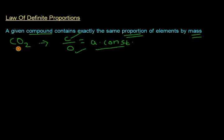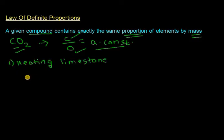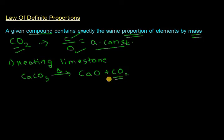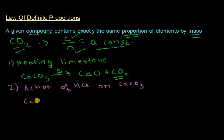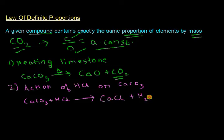Let's look at four preparations of carbon dioxide. The first is by heating limestone, which is calcium carbonate (CaCO3). When you heat CaCO3, you get calcium oxide and carbon dioxide. The second method is by the action of hydrochloric acid on calcium carbonate: CaCO3 + 2HCl → CaCl2 + H2O + CO2. This is the balanced chemical reaction for the second method.